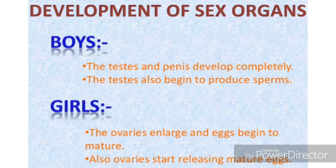During puberty, in both boys and girls, complete development of sex organs will take place. They attain sexual maturity.